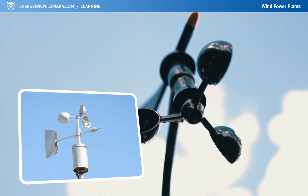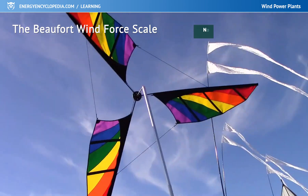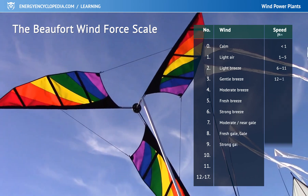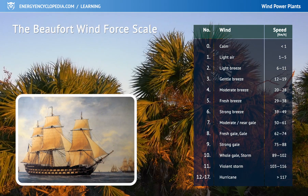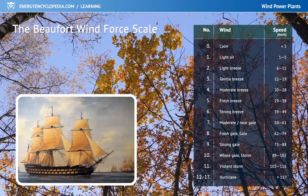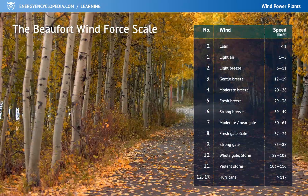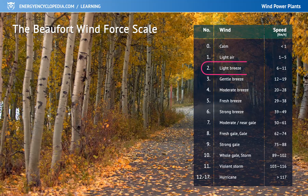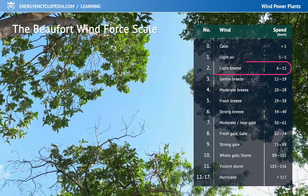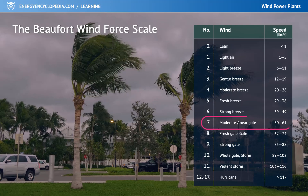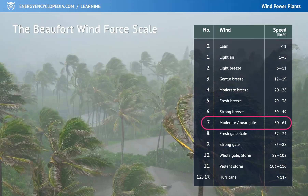Even if we don't have an anemometer available, we can estimate the wind speed by the Beaufort scale. It was introduced in 1806 for naval use, and it describes wind speed by its effect on the environment. So we know that if the twigs are only gently rustling, the wind speed will be about 10 km per hour, while if the wind is so strong that we struggle to walk against it, it will be over 50 km per hour.